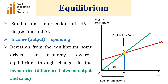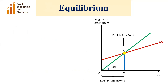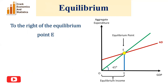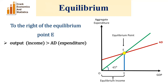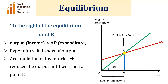Deviation from the equilibrium point drives the economy back towards equilibrium through changes in inventories. Inventories is the difference between output and sales. To the right of equilibrium point E, output is greater than aggregate demand, meaning the 45-degree line is above the aggregate demand curve. Expenditure falls short of output, so we have accumulation of inventories, which reduces output until we reach point E.